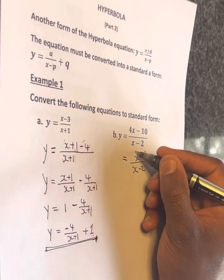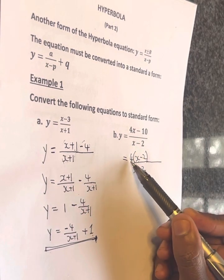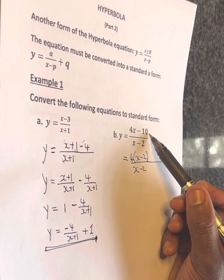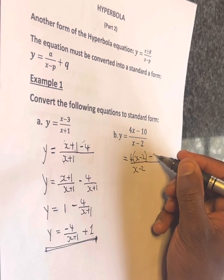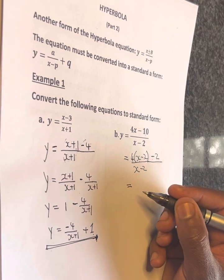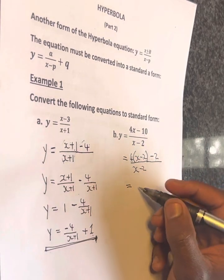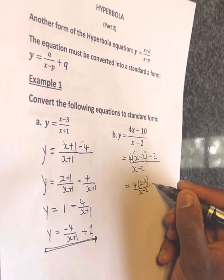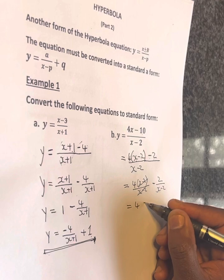I want to multiply by 4, so we have 4x. Four times negative 2 gives us minus 8. We need minus 10, so we subtract negative 2. We divide by x minus 2, so we have 4 times x minus 2 over x minus 2.